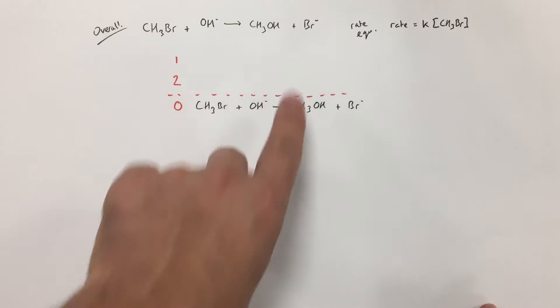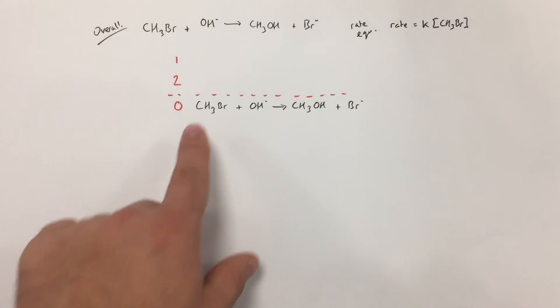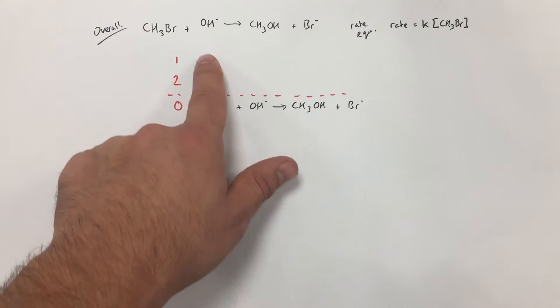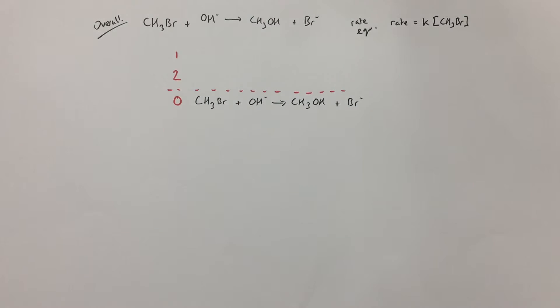That isn't to say that there aren't other things that are created in this reaction that are used up in the mechanism itself—we call these intermediates. We have our overall, so we've got to use that as our check that after we've done these two steps, they have to give us this.